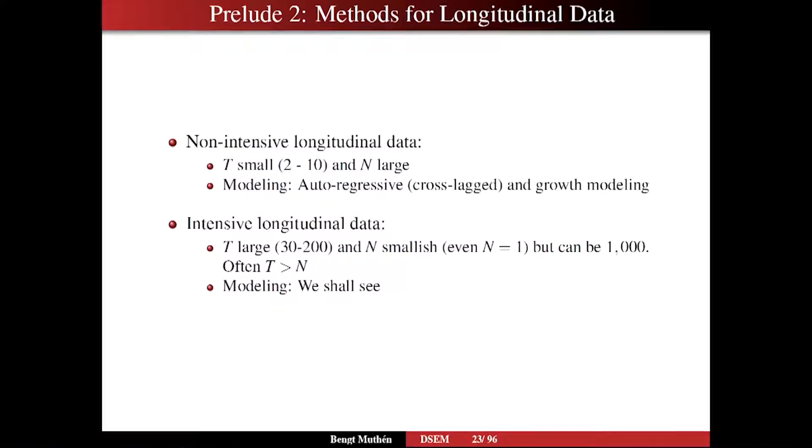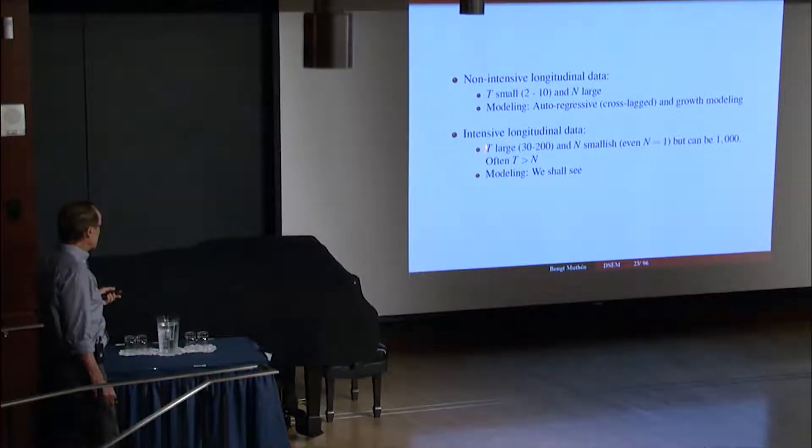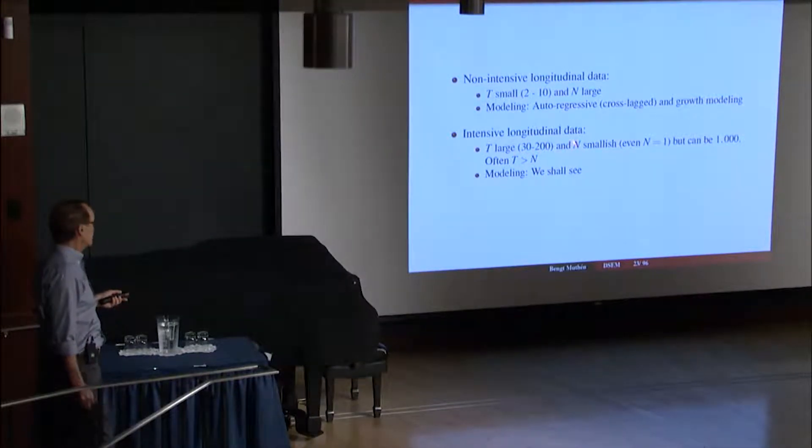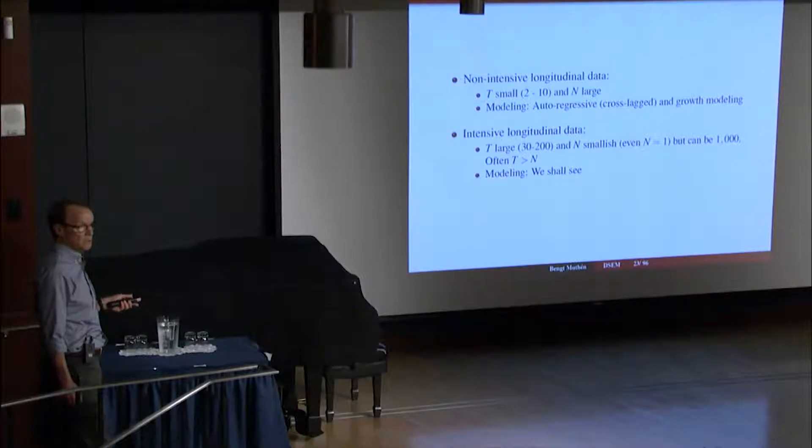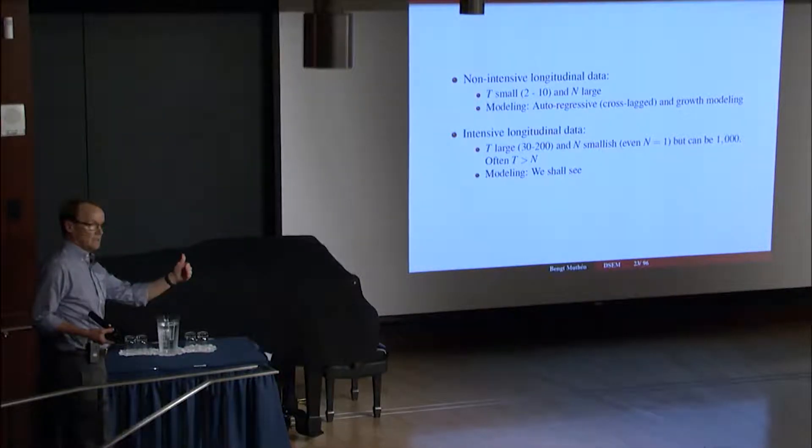We're going to distinguish between non-intensive longitudinal data—that's the growth modeling type of data we're used to. You want to have perhaps three or four time points, sometimes up to ten, but the number of time points T is usually very small and N is very large. Examples of that are autoregressive cross-lag modeling, which Ellen talked about in the dynamic setting, and growth modeling. Intensive longitudinal data: T is much larger, 30 to 200 and very much higher than that in many cases, like physiological measurements.